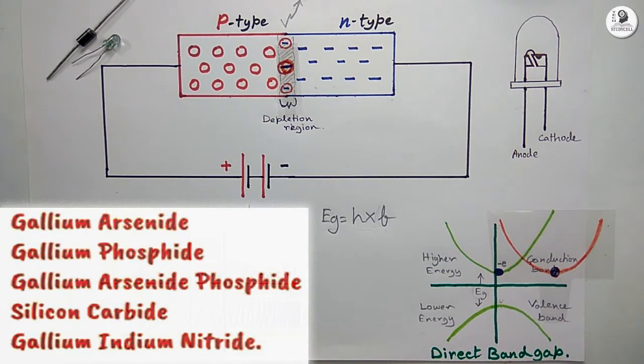Like gallium arsenide, gallium phosphide, gallium arsenide phosphide, silicon carbide, gallium indium nitride. So this direct bandgap semiconductor can emit light in different colors.